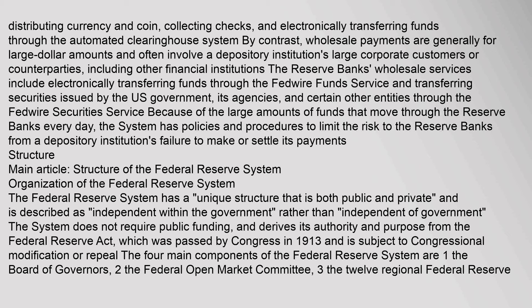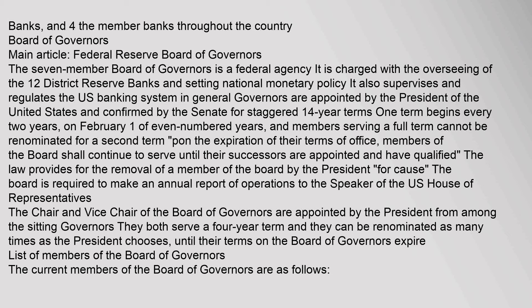The Federal Reserve System has a unique structure that is both public and private, and is described as independent within the government rather than independent of government. The system does not require public funding, and derives its authority and purpose from the Federal Reserve Act, which was passed by Congress in 1913. The four main components of the Federal Reserve System are: (1) the Board of Governors, (2) the Federal Open Market Committee, (3) the 12 Regional Federal Reserve Banks, and (4) the Member Banks throughout the country.